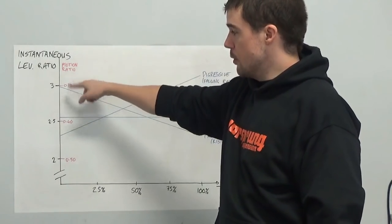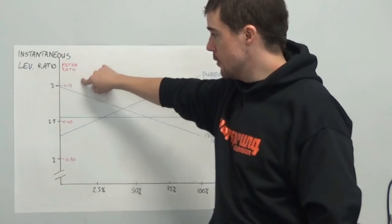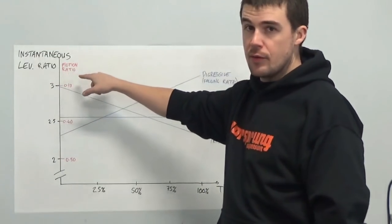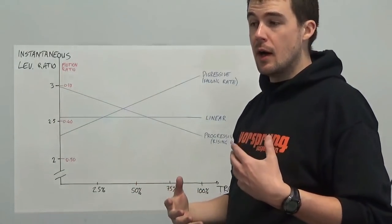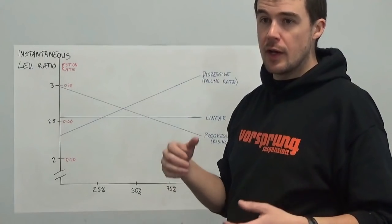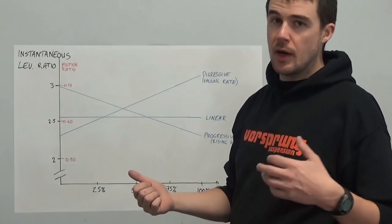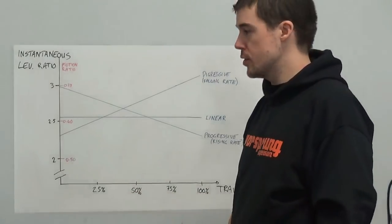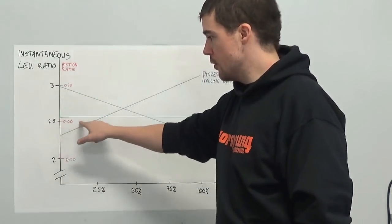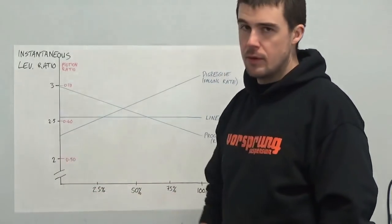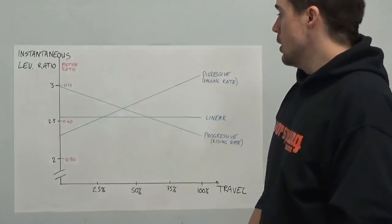Now, the motion ratio that I've also included on the same axis is obviously the inverse of the leverage ratio. It's basically the same number, but one is dividing the shock travel by the wheel travel, one is dividing the wheel travel by the shock travel. So obviously 1 over 3 is 0.33, 1 over 2.5 is 0.4, 1 over 2 is 0.5.